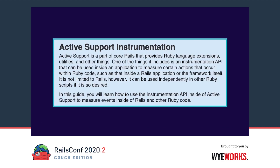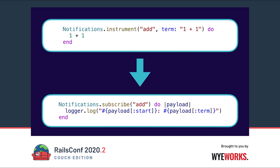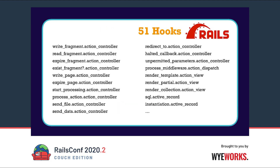Active Support also ships with an instrumentation framework. You can imagine this a little bit like an event stream. At the top we instrument an event with a name that has a payload containing a term, and we execute 1 plus 1 in the function block. At the bottom we subscribe to this event, and every time the code at the top gets executed, the subscribe block gets executed as well — in it we just log out the start and the payload of the term. Luckily Ruby on Rails already ships with more than 50 hooks into the framework which helps us to extract metrics from our apps.